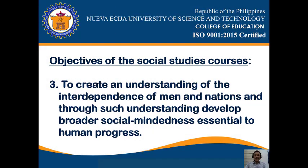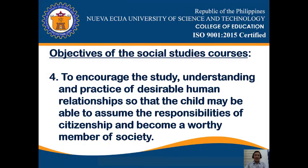Number three is to create an understanding of the interdependence of men and nations, and through such understanding develop broader social mindedness essential to human progress. Number four is to encourage the study, understanding, and practice of desirable human relationships so that the child may be able to assume the responsibilities of citizenship and become a worthy member of society.